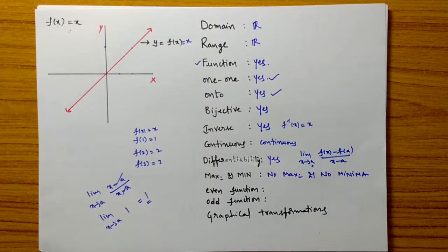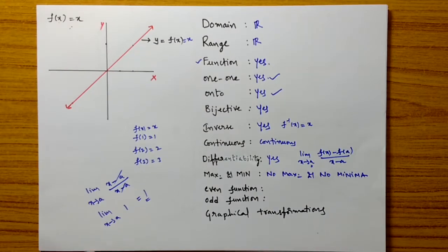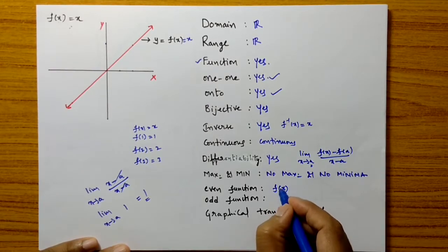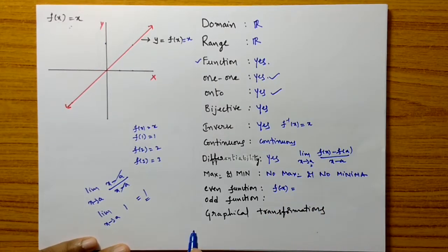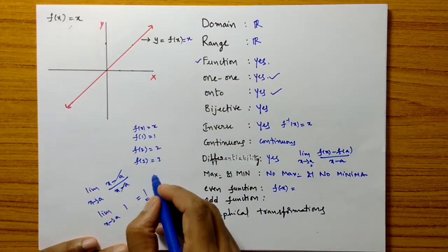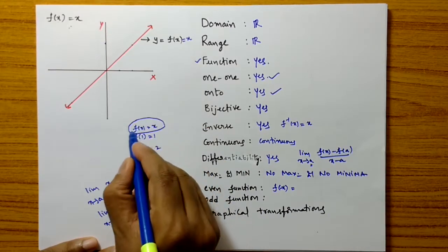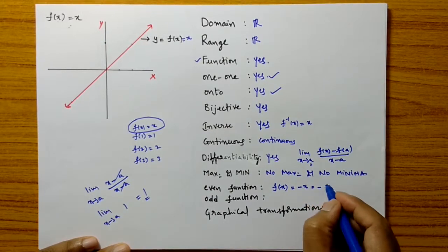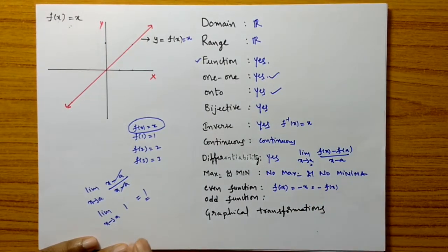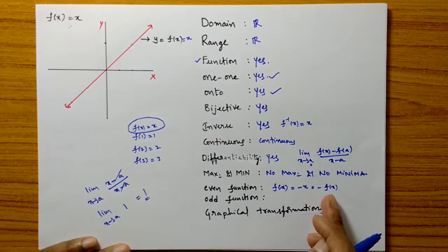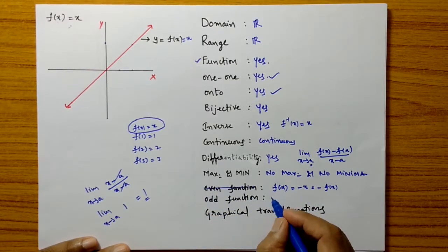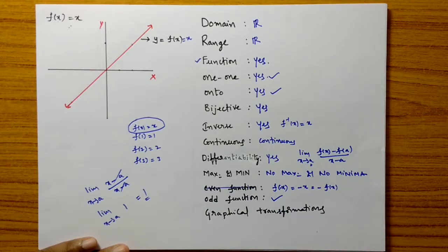Is it an even function or an odd function? We calculate f of minus x. When f of x equals x, f of minus x equals minus x, which is nothing but minus f of x. So f of minus x equals minus f of x, which means it is an odd function.